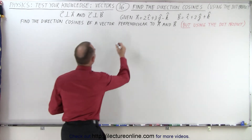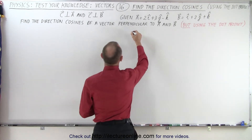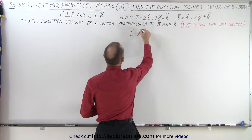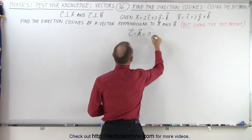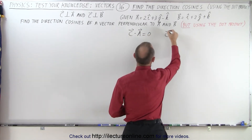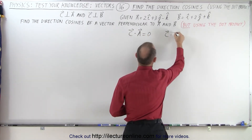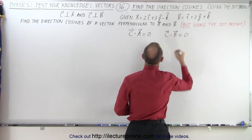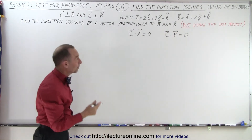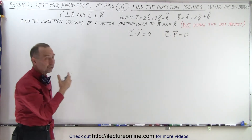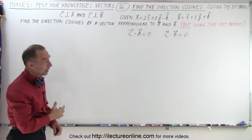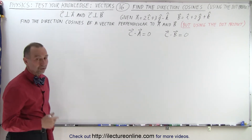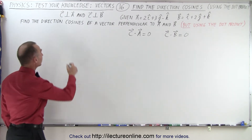That means that when we do C dot A, we get zero. And when we take the dot product of C dot B, we get zero as well. Because if two vectors are perpendicular, the dot product of those two vectors must therefore equal zero.